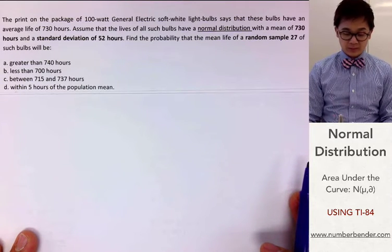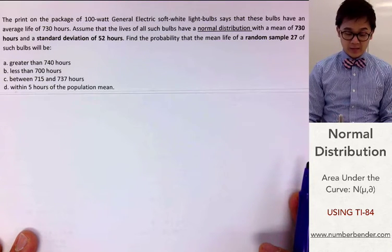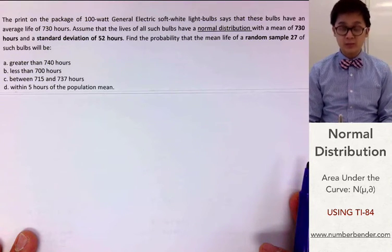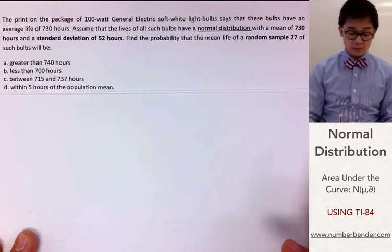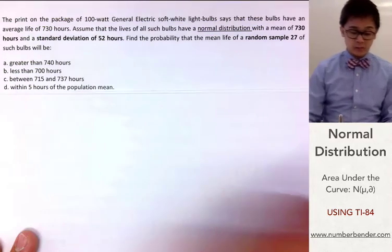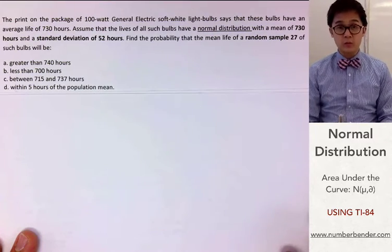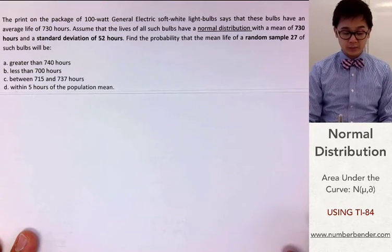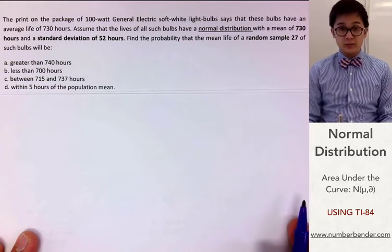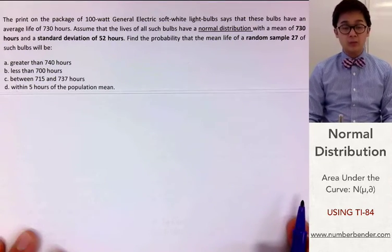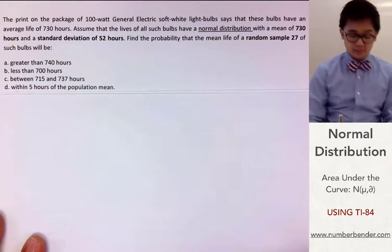Find the probability that the mean life of a random sample of 27 light bulbs will be: a) greater than 740 hours, b) less than 700 hours, and so on. Let's go ahead and answer problem letter A.